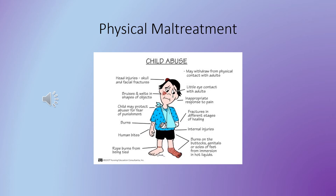Always plot height and weight on the standard growth chart, as that can show delays pointing to neglect or not getting enough nutrition. Other examples to look for: bruising, welts, lacerations, burns, cigarette burns, fractures, bite marks. Look at whether fractures are healing, brand new, or old — that can tell us if there's been a history. Bruises on a child too young to walk are always highly suspicious. We call that the three B's: bruises on babies are nearly always bad.